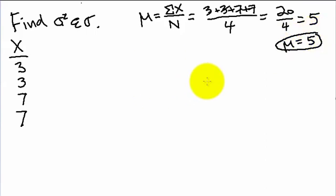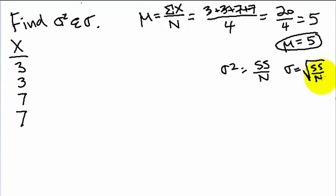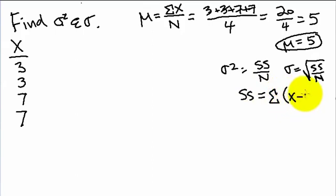To find the standard deviation and variance, I'll write the formulas here. The variance is equal to SS over n, and the standard deviation is equal to the square root of SS over n. SS is the sum of squares, equal to the sum of (x minus mu) squared. We're going to find SS first, then plug it into the formula to find the variance.